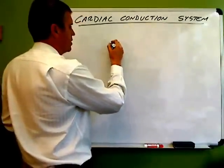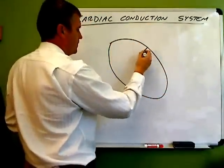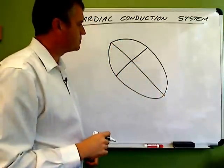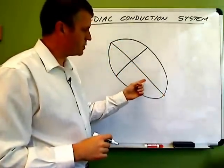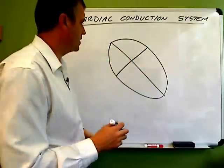First we'll draw a crude image of the heart. So this picture is supposed to represent the heart. These are the ventricles down here, the lower chambers. These are the atria up top, the upper chambers.